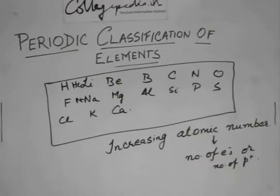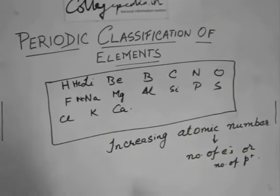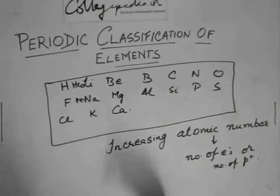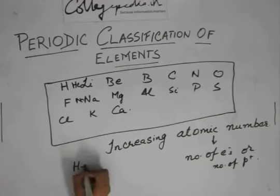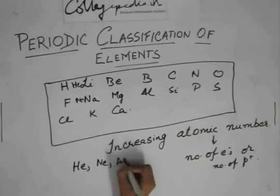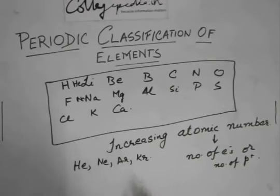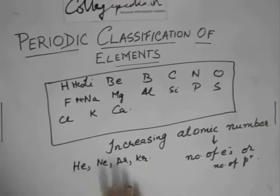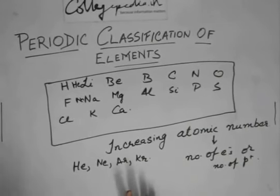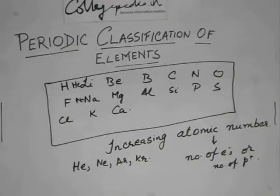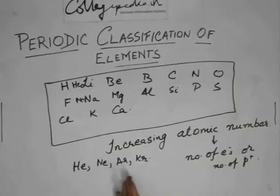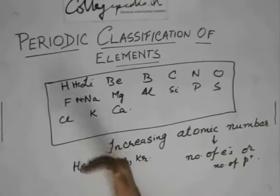Another disadvantage of Newland's law of octaves was that it could not accommodate noble gases in it, which were discovered much later. Noble gases are helium, neon, argon, krypton. These are noble gases, which do not react at all. These were discovered very late, and so the Newland's law of octaves, even after their discovery, could not accommodate them inside the periodic table.